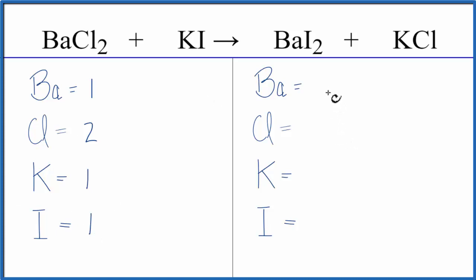On the product side of the equation, one barium, one chlorine, one potassium, and two iodine atoms.